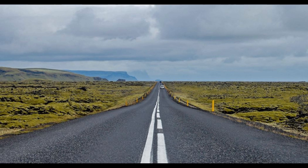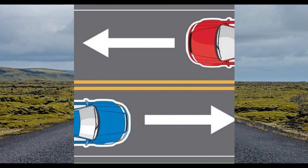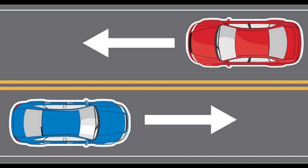Historically, many roads were simply recognizable routes without any formal construction or maintenance. The OECD defines a road as a line of communication traveled way using a stabilized base other than rails or airstrips, open to public traffic primarily for the use of road motor vehicles running on their own wheels, which includes bridges, tunnels, supporting structures, junctions, crossings, interchanges, and toll roads, but not cycle paths.